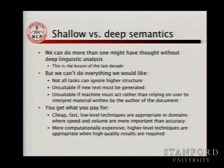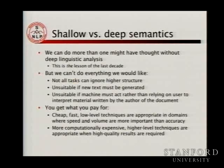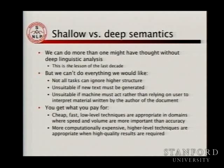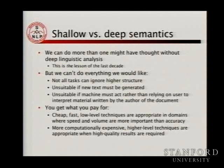A key distinction is when you want computers to perform tasks where they have independent responsibility for low-level actions building up to a higher-level action. For web search, the computer finds candidate documents and the human decides which are good. But if the computer is responsible for going out, investigating what espresso machine you should buy, and then placing the order for the best price, it really has to understand a lot more about what's being said.